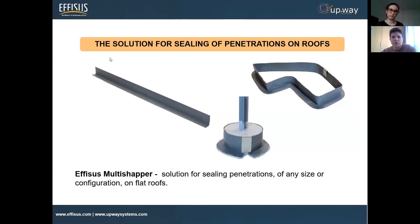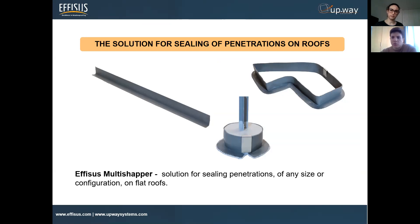What we have brought today as our solution is the Multi-Shaper, which is part of the Stopper solution family. Multi-Shaper is the new solution we introduced in the second part of last year. It's a very innovative solution — a flexible material that allows you to shape or mold it around penetrations, along with some accessories including a pouring sealant and a filling sealant that will seal all the penetrations on a roof.